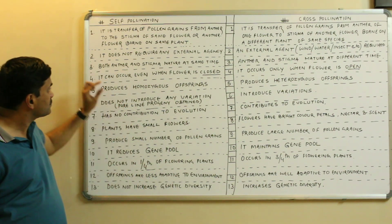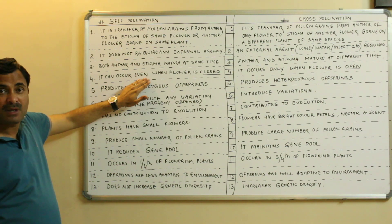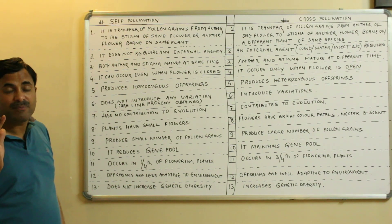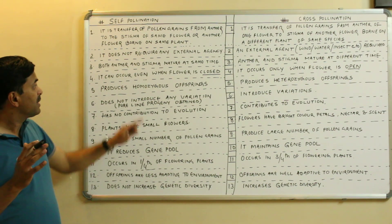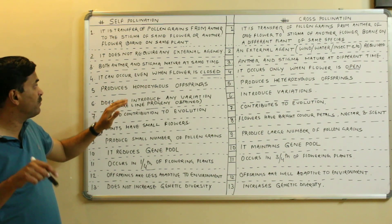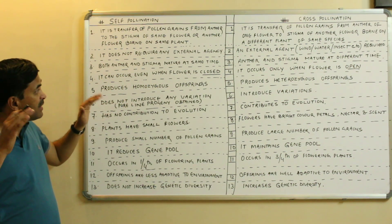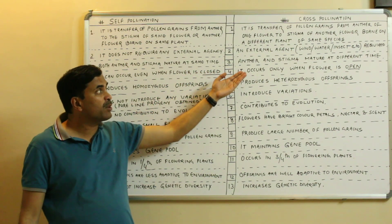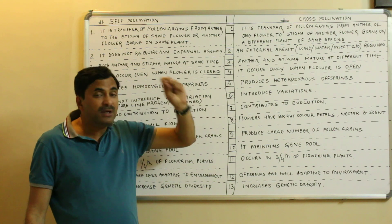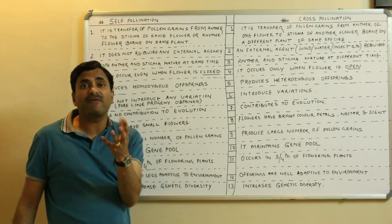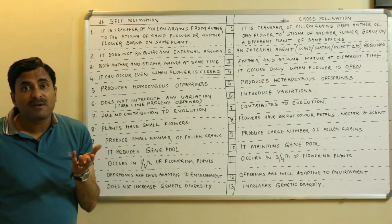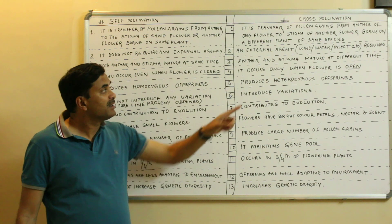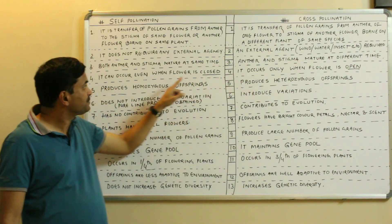Fourth point: self-pollination can occur even when the flower is closed. A cleistogamous flower is one that never opens — its reproductive organs are not exposed — and in such flowers self-pollination always occurs. In contrast, cross-pollination occurs only when the flower is open, because pollen grains come from outside and cannot enter a closed flower. So cross-pollination always requires an open flower.